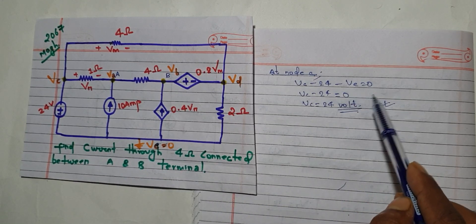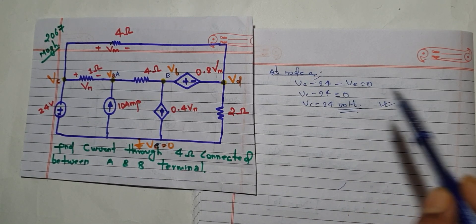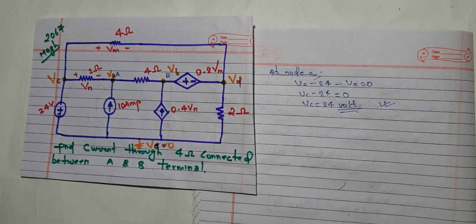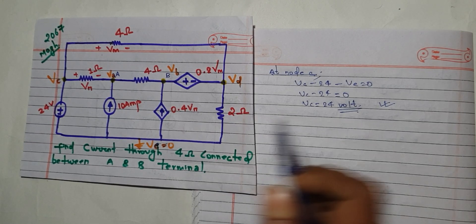So BC is equal to 24 volts. I am directly applying the topical nodal analysis concept. When you see a case where a voltage source is also present in a circuit, we need to handle it carefully.